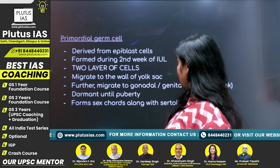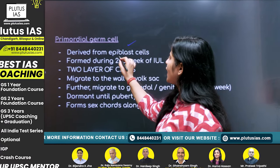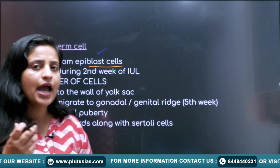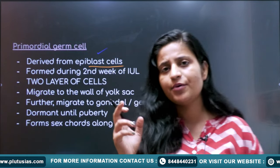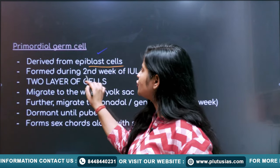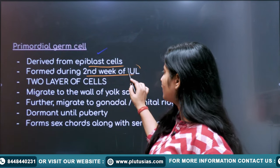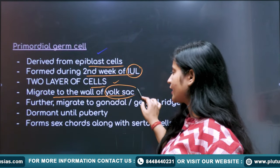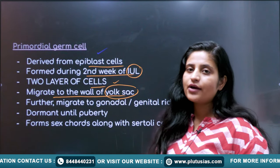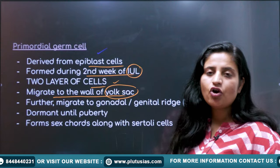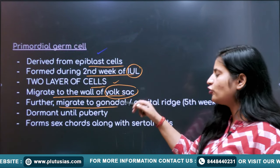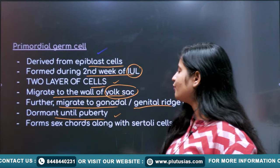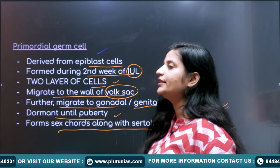Primordial germ cells: they derive from the epiblast cells. Initially, when the inner cell mass segregates, it segregates into the hypoblast, columnar cells, and epiblast. Primordial germ cells are derived from epiblast cells. They form during the second week of intrauterine life when there are only two layers of cells. They then migrate to the wall of the yolk sac - we have extra embryonic membranes: yolk sac, amniotic layer, amnion, and allantois. They further migrate to the gonadal or genital ridge at the fifth week of pregnancy.